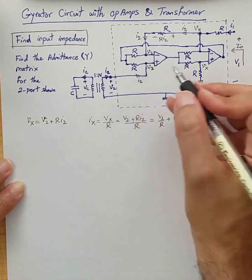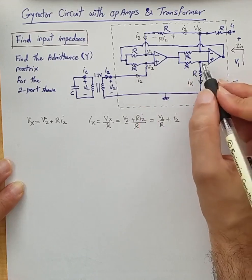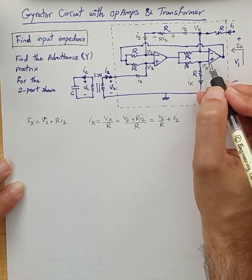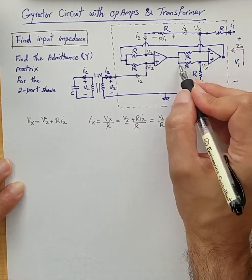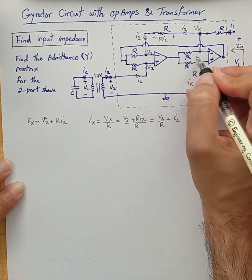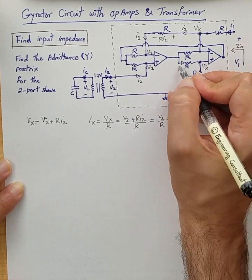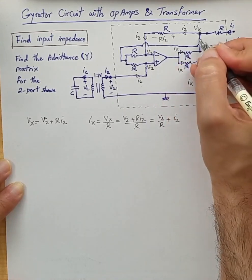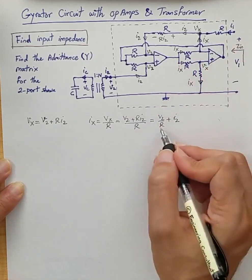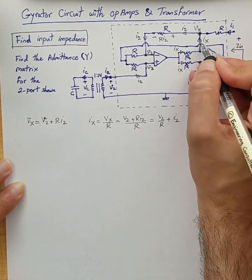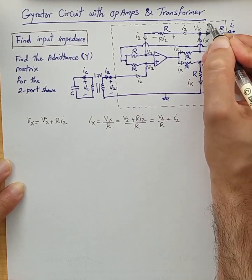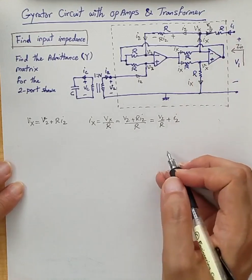Since no current can flow into the ideal terminals of an ideal op-amp due to infinite input impedance, the current Ix must flow through the circuit in the direction shown. Because the voltages at the two ends of the matching resistors are equal, the same current Ix flows through both. Ix therefore flows toward port 1. Keeping in mind that Ix = I2 + V2/R, the I2 component flows one way and the V2/R component flows toward port 1.